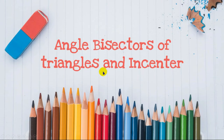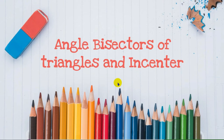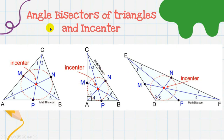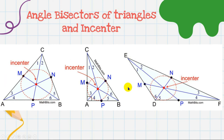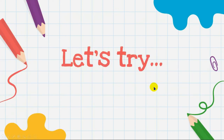Now, angle bisectors are like the median in that their point of concurrency is always inside the triangle — whether the triangle is acute, right, or obtuse, the in-center will always be inside the triangle.